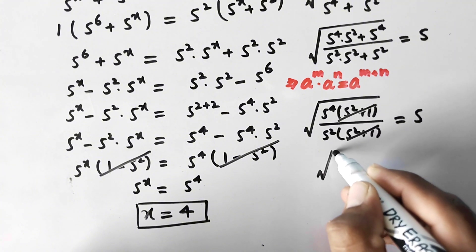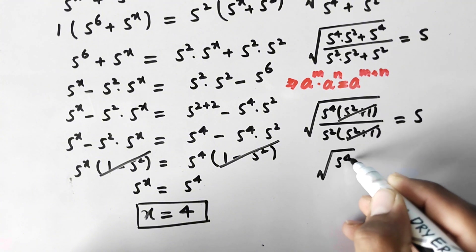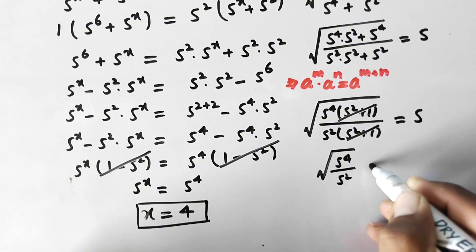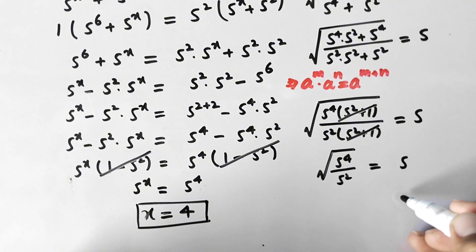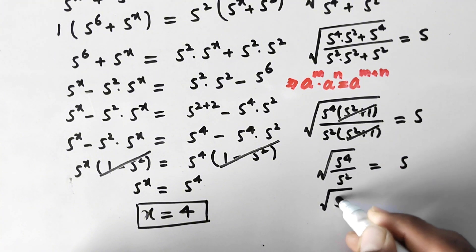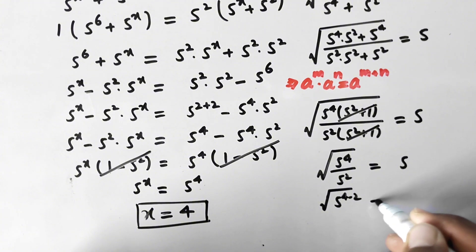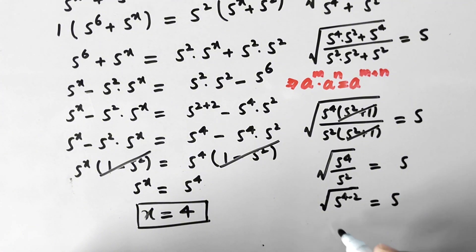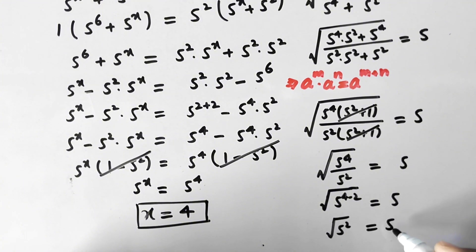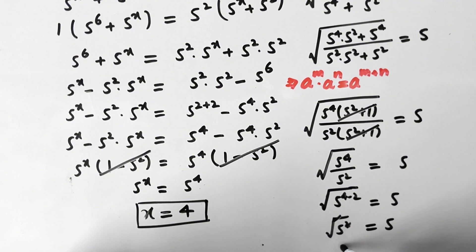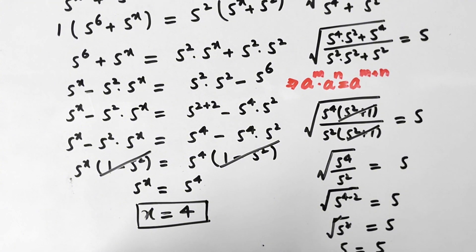We are left with square root of 5 to power 4 divided by 5 square equal to 5, which simplifies to square root of 5 to power 4 minus 2 equal to 5, or square root of 5 to power 2 equal to 5. The square root cancels the square and we get 5 equal to 5. The right hand side equals the left hand side, which verifies that x equal to 4 is correct.